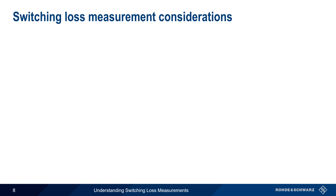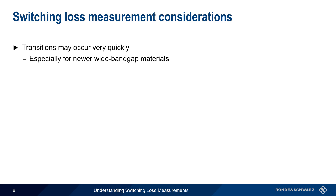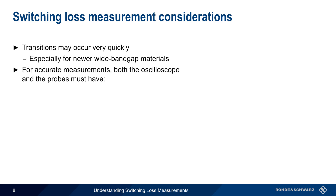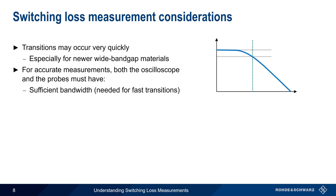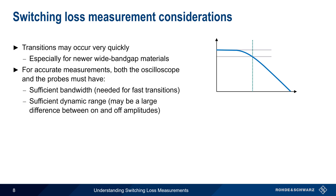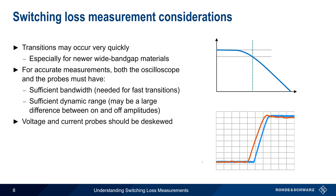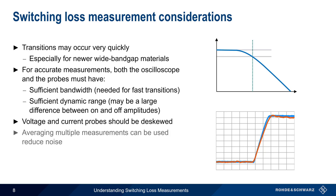There are several things that should be taken into consideration when making switching loss measurements. First, transitions may occur very quickly, particularly in the case of newer wide band gap materials. Accurate switching loss measurements therefore require that both the oscilloscope and the probes have sufficient bandwidth to accurately measure signals with very fast slew rates, as well as sufficient dynamic range to accurately measure the ON and OFF amplitudes. The voltage and current probes should be properly de-skewed to ensure that no time offset is present between the measurements of voltage and current. Finally, averaging may also be used to help reduce the amount of noise present in the switching loss measurements.